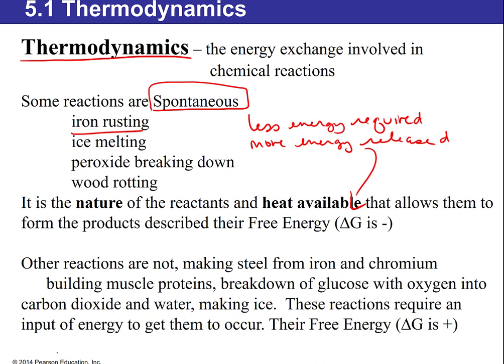For example, if you make steel, you take iron and chromium, but you can't just set them side by side — they won't automatically combine. You have to heat them until they're molten, mix them, then cool them slowly to produce steel. That requires a huge amount of energy in, with not as much energy coming out. Building muscle also requires a lot of energy — it's not a spontaneous process.